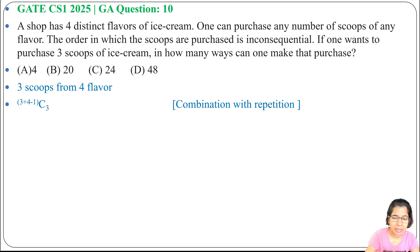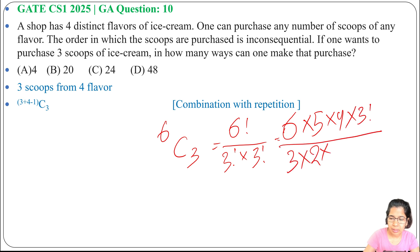C(6,3), that is 6 factorial divided by 3 factorial times 3 factorial. 6 factorial we can write as 6 × 5 × 4 × 3 factorial, divided by 3 × 2 × 1 × 3 factorial.